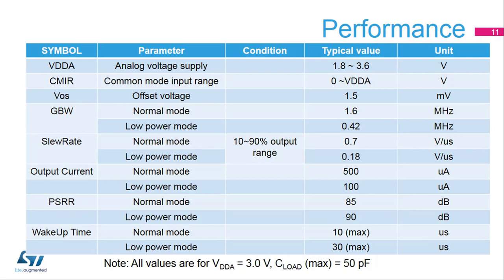The following table shows performance parameters for the STM32L4's op-amp. The op-amp can work from 1.8 to 3.6 volts from the VDDA supply with rail-to-rail input and output. The offset voltage can be calibrated down to 1.5 millivolts. It has normal and low-power operating modes. Normal mode can have a gain bandwidth of 1.6 MHz, while low-power mode only has 0.42 MHz of gain bandwidth, but comes with the added benefit of reducing power consumption.